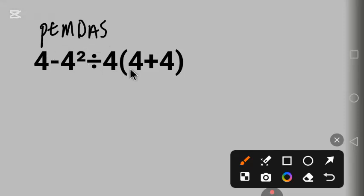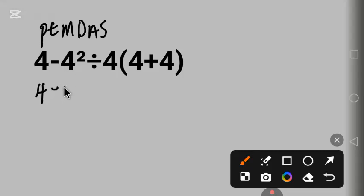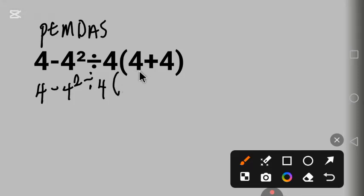The parentheses here is 4 plus 4. Let's begin with that. Bring down this 4 minus this 4 squared, divide by 4. 4 plus 4 is 8 — parentheses done.